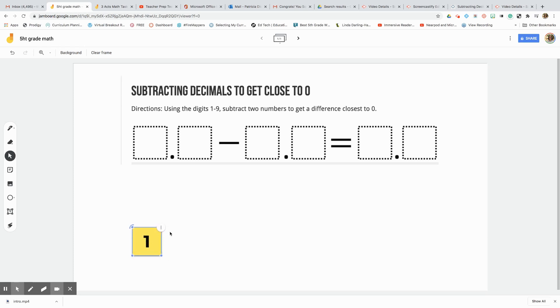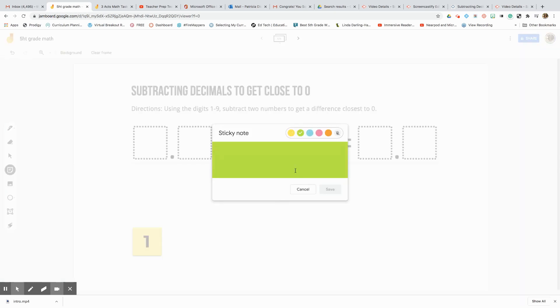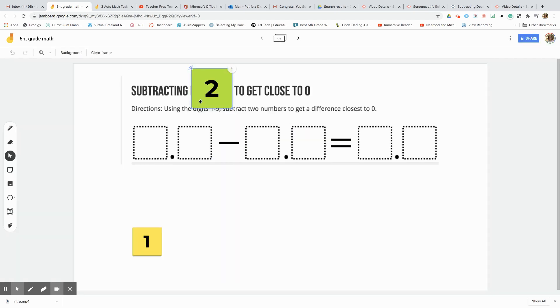And then I'll do it again for each digit, so I'll do zero through nine using the sticky notes. Feel free to pick different colors if you want for each card - you could do that. Okay, and again, resize, make sure it fits, and then I just duplicate.